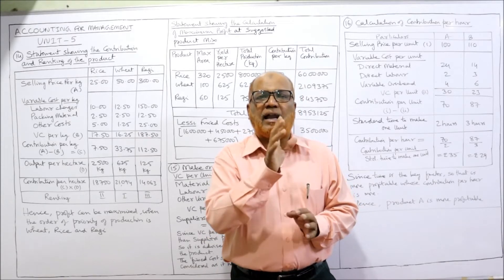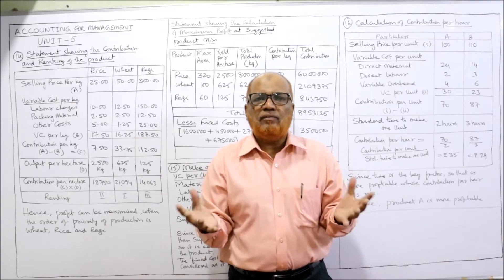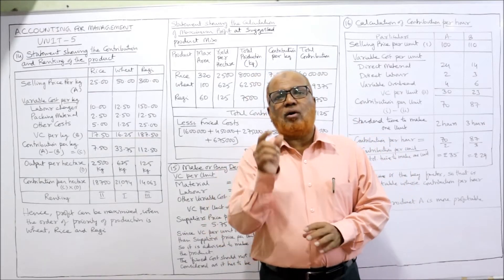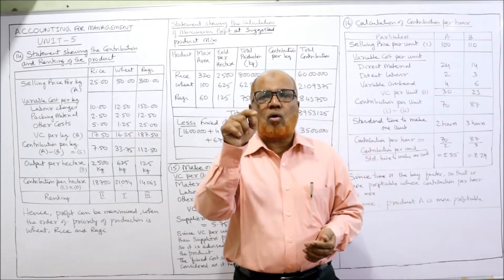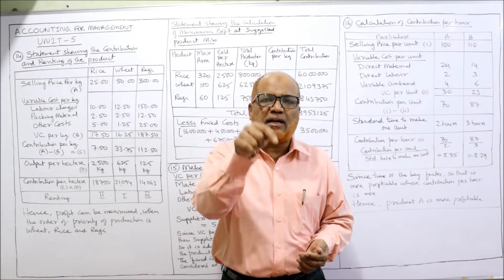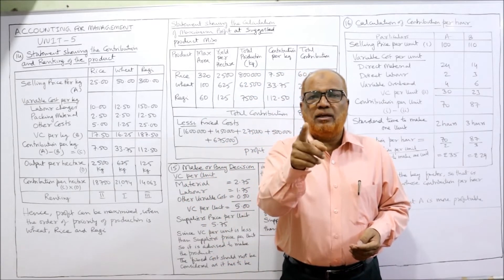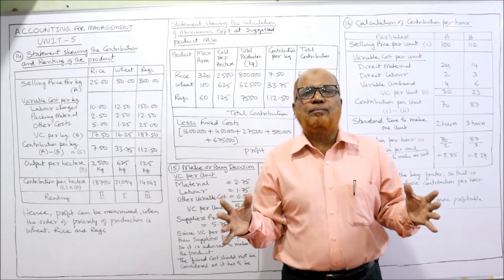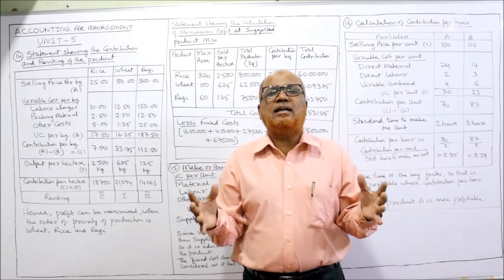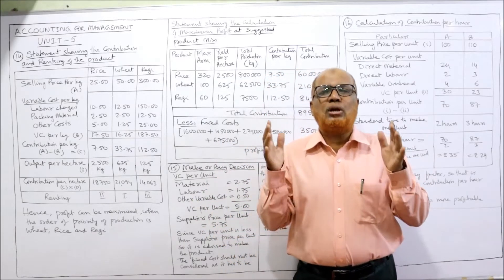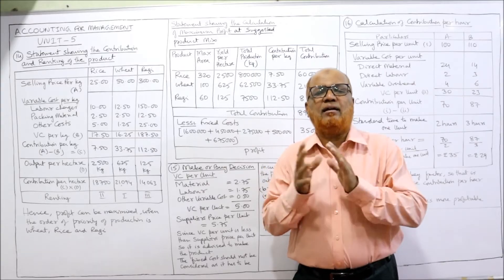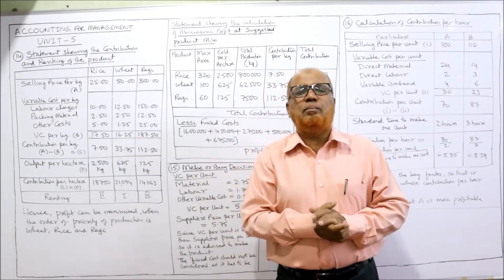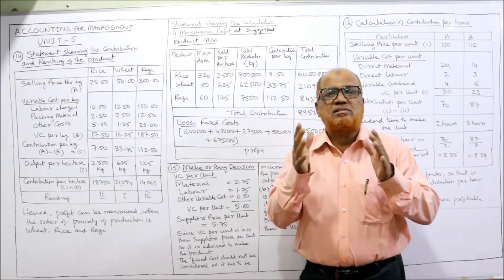The key factor is the availability of land in hectares — totally 500 hectares are available. Whenever there is a limiting factor, we calculate contribution per unit of that limiting factor. Here land is the limiting factor, and the unit of land is in hectares, so we calculate the contribution per hectare of land.